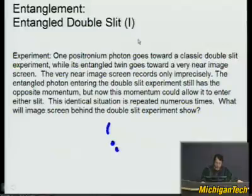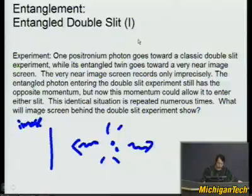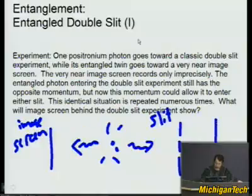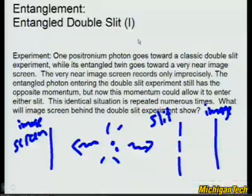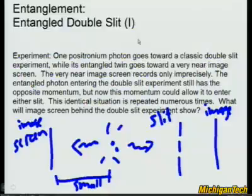One photon goes through a classic double-slit experiment, while its entangled twin goes toward a very nearby image screen. So you have positronium here — one photon goes in this direction toward just an image screen, and the other photon goes toward a double-slit experiment with a slit screen and an image screen behind it. This distance to the near screen is small. Therefore, the entangled photon entering the double-slit still has the opposite momentum, which could allow it to enter either slit. This identical situation is repeated numerous times.